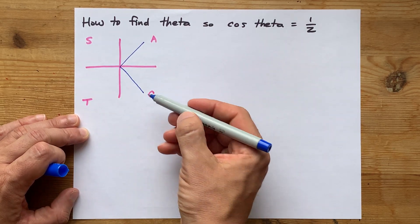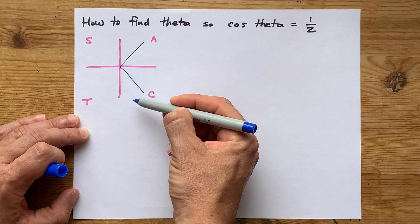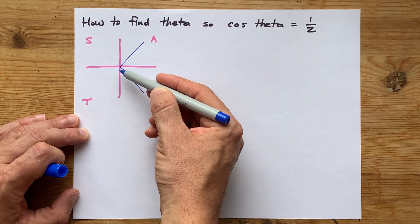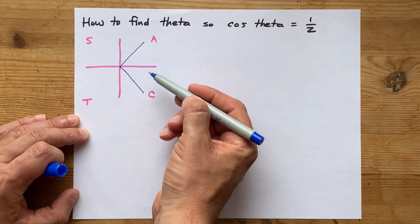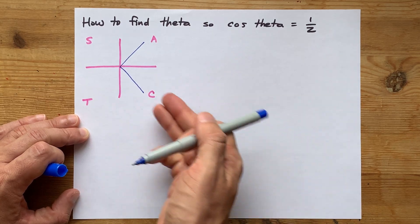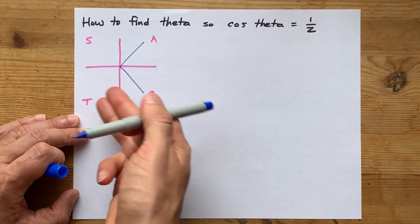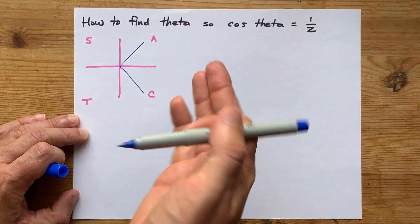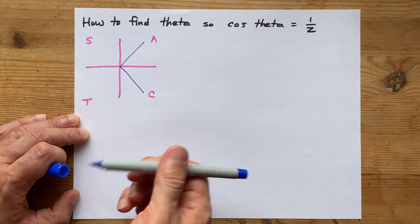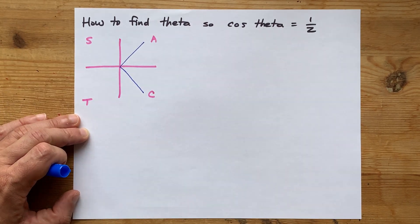Put another way, in this corner, from 270 degrees to 360 degrees, cosine is positive, but sine is negative, and tan is also negative. These initials are telling you what's positive in that quadrant. A means all. They're all positive there.